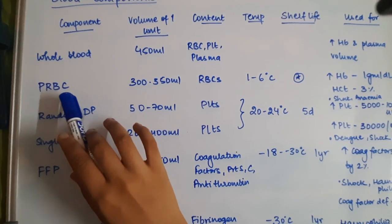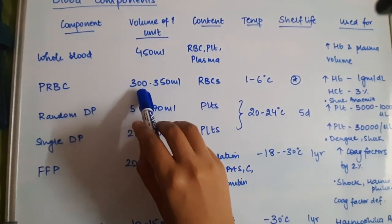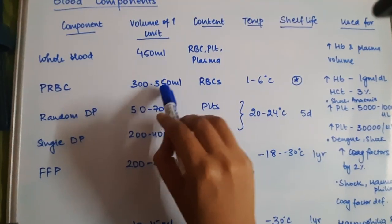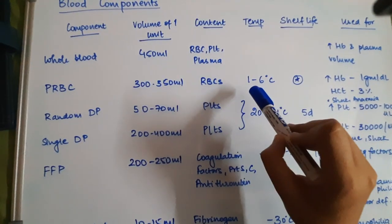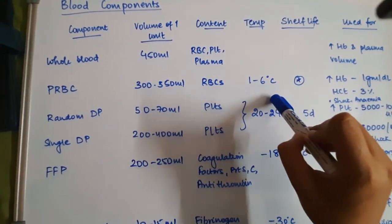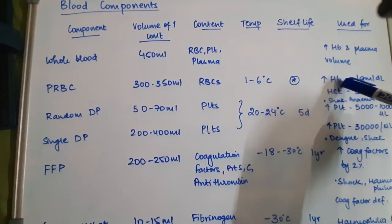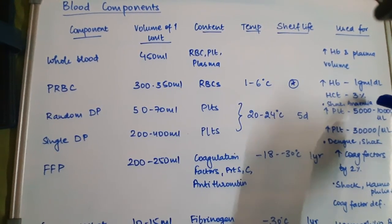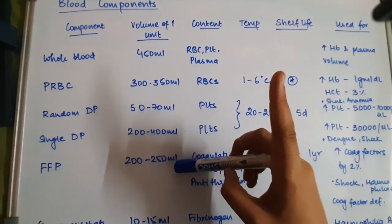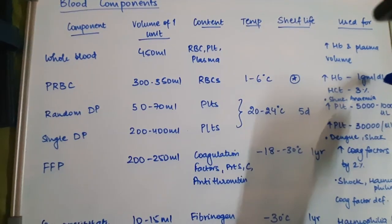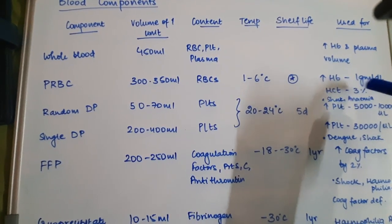In one packet of PRBC or packed red blood cells, there is a volume of 300 to 350 ml. It consists of only red blood cells. It is stored at a temperature of 1 to 6 degrees Celsius. It is used for increasing hemoglobin, which might be required in shock and anemia. One transfusion of one packet of PRBC increases hemoglobin by 1 gram per deciliter and increases hematocrit by 3%.